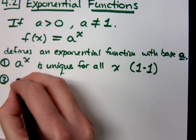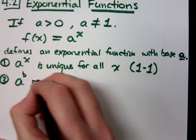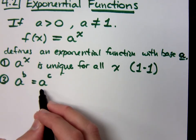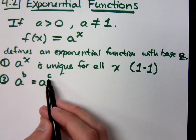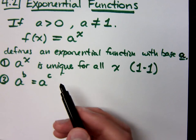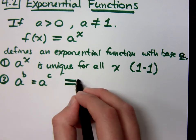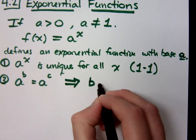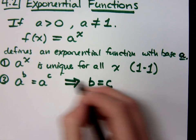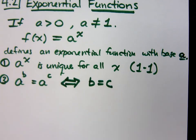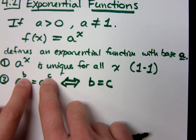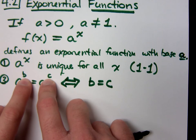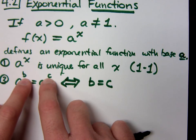Number two. If you have the same base, a and a, and you have an expression like this, a to the b equals a to the c, this only happens if b is equal to c. Of course, it goes both ways here. This is what we call an if and only if statement. So, with these same bases, if this is an equation, then these exponents have to be equal.